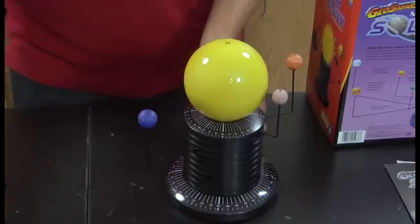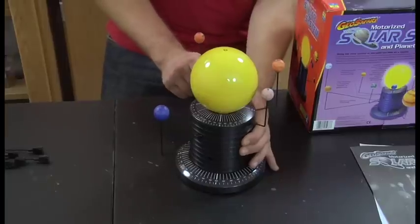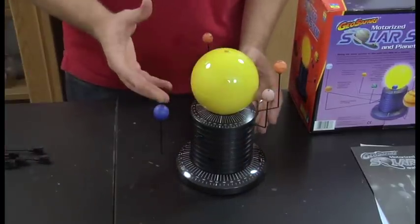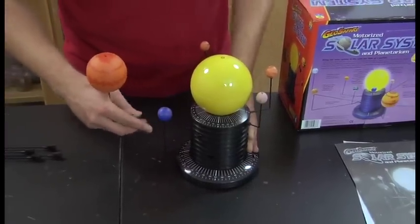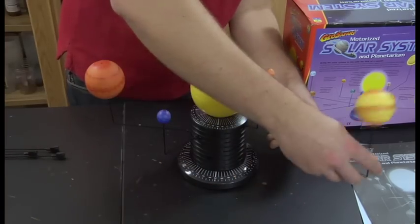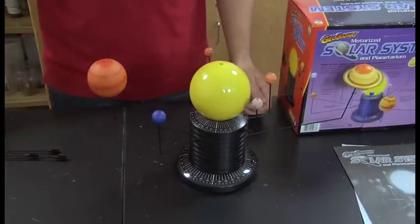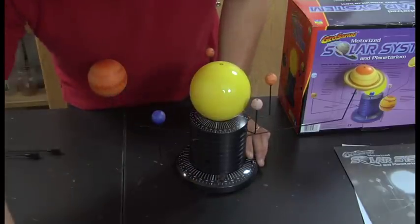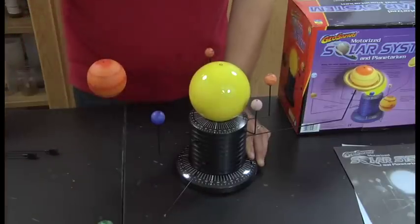Earth. Mars, going on the fourth ring. Place our sun dome back on top. Jupiter. Saturn. Uranus. And Neptune.